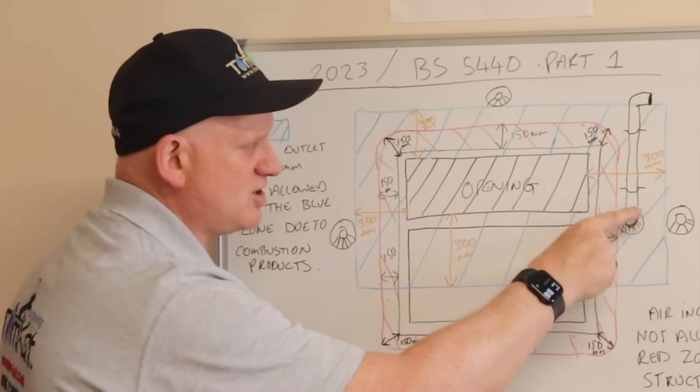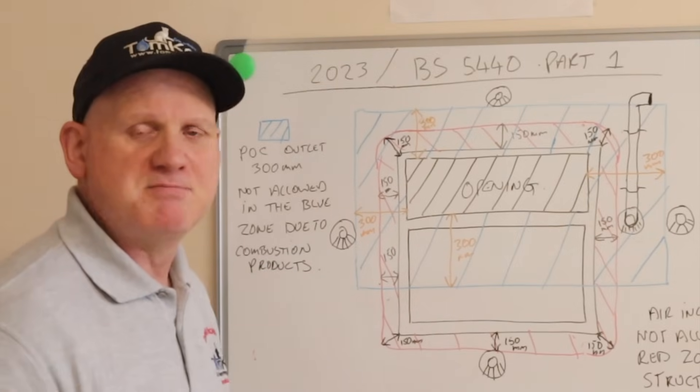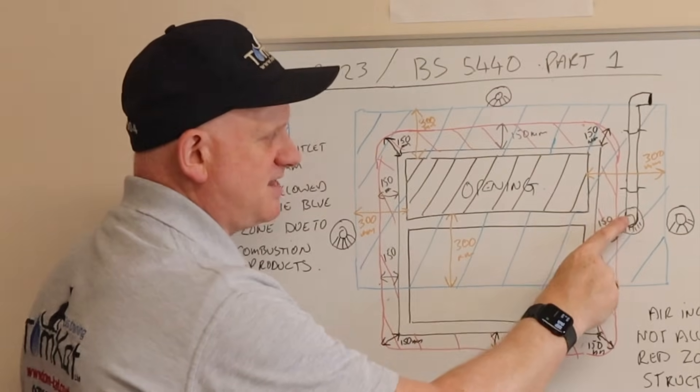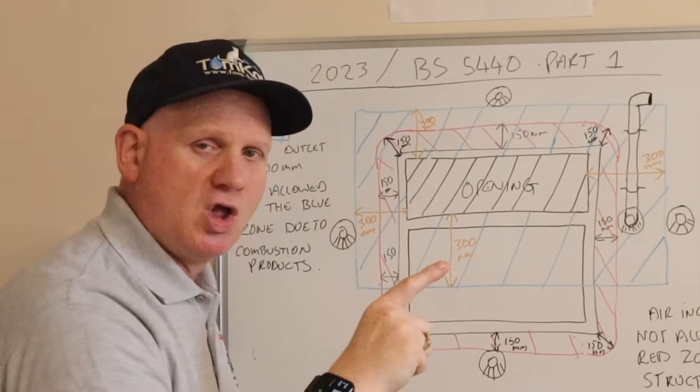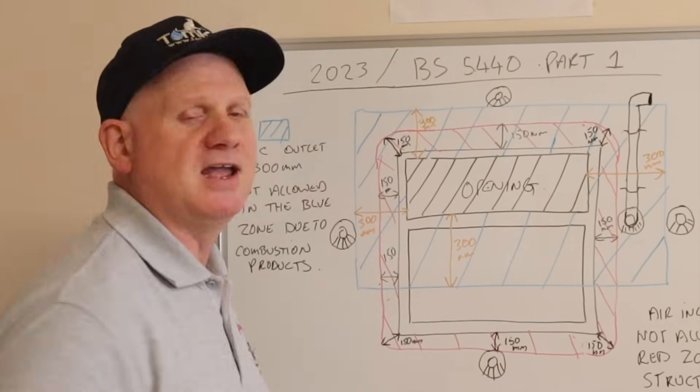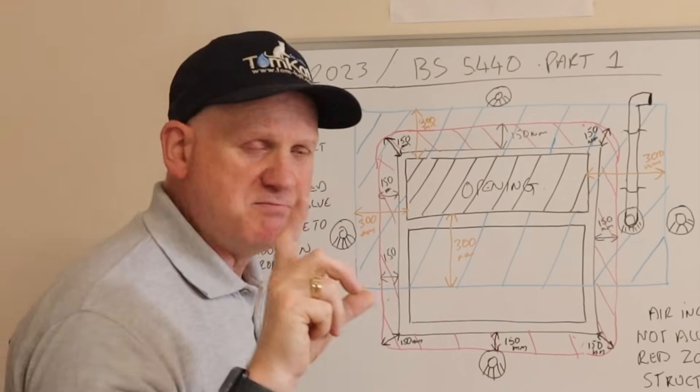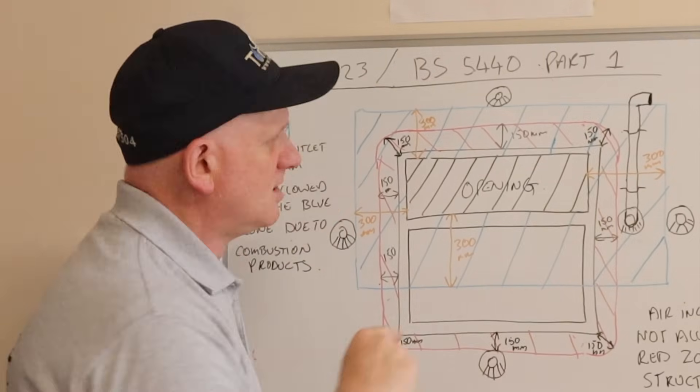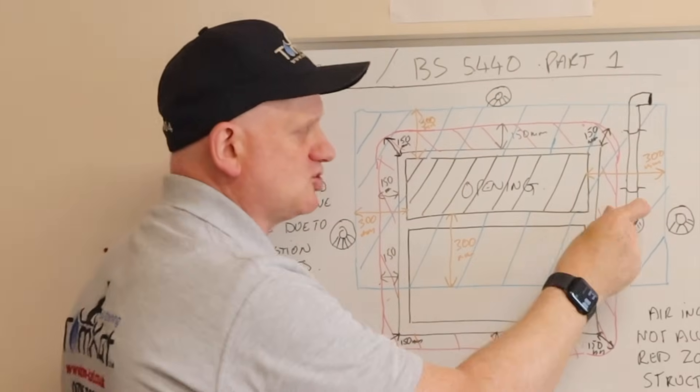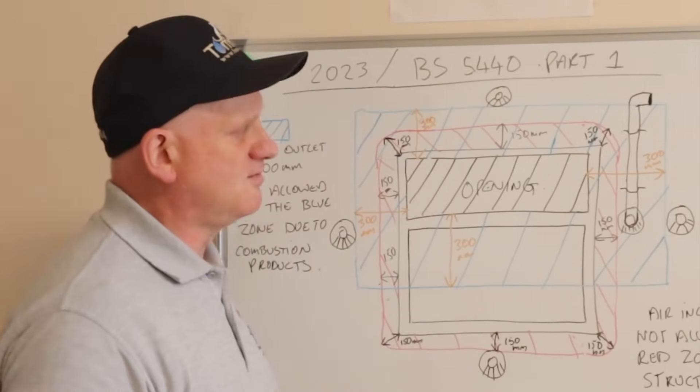So if we were going to install a flue here, and we were more than 150mm away from the frame, we can use a plume management kit. Now this plume management kit then will have to terminate more than 300mm away from the opening in the building, so outside the blue zone. It also has to have a minimum of 500mm.